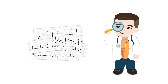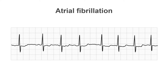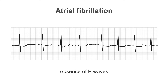When you analyse a Holter recording, there are some arrhythmias that you'll encounter commonly. Let's take a look at some of those now. The most common sustained arrhythmia we see on Holter recordings is atrial fibrillation. It's identified by its irregularly irregular character and by the absence of any discernible repeating P-wave activity.